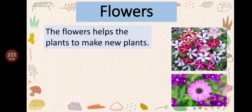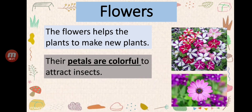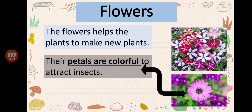Now let's talk about flowers. The flowers help the plant to make new plants. Always remember that the flower helps the plant make new plants. Also, the petals of the flower are colorful to attract insects. The colored part of the flower is called petals, and the purpose of the petals is to attract insects so they will come.